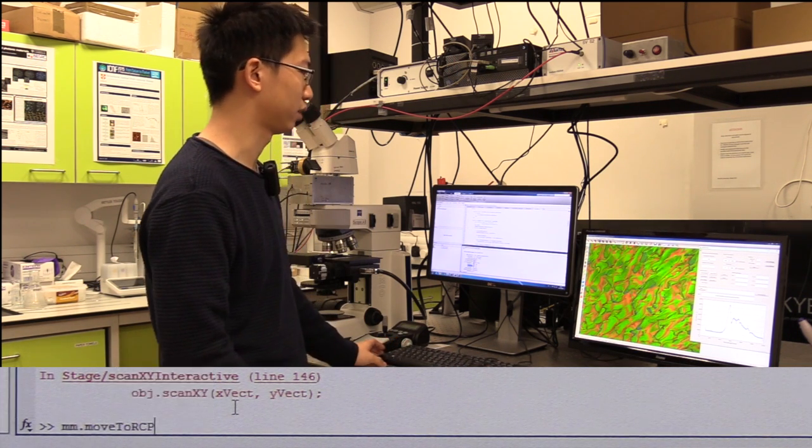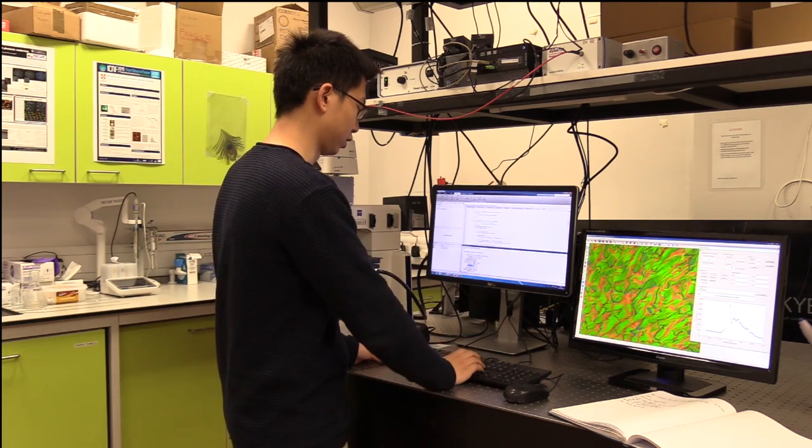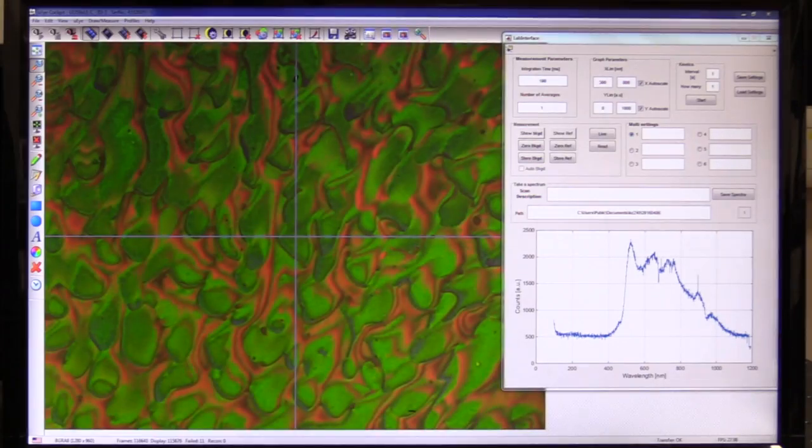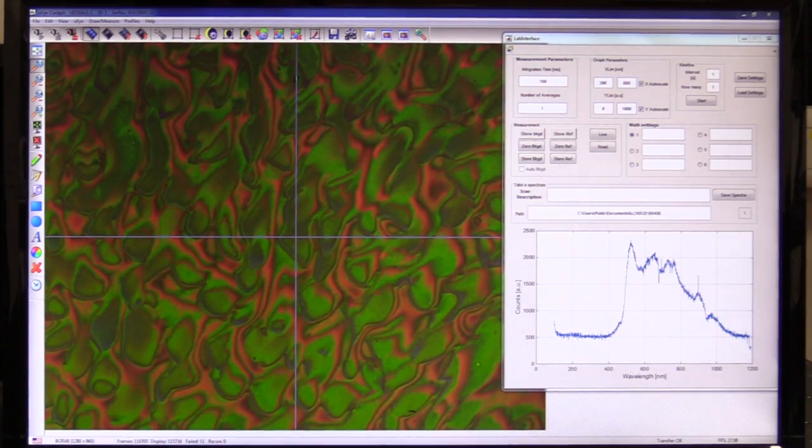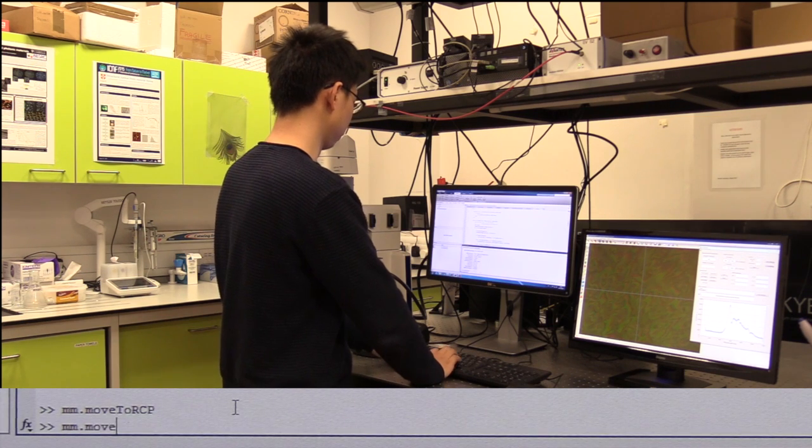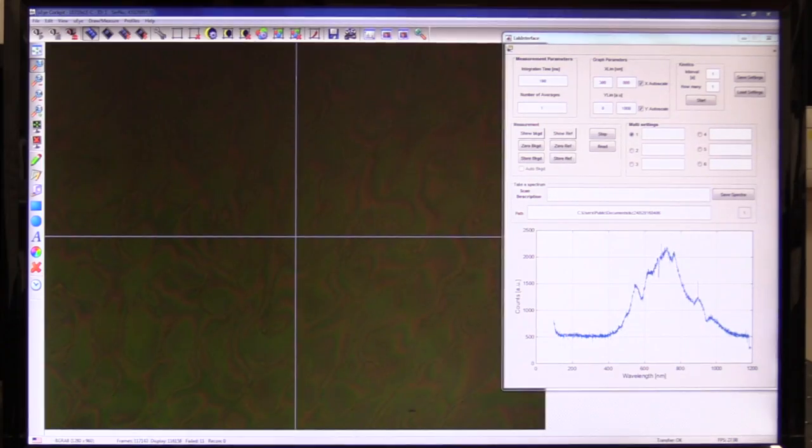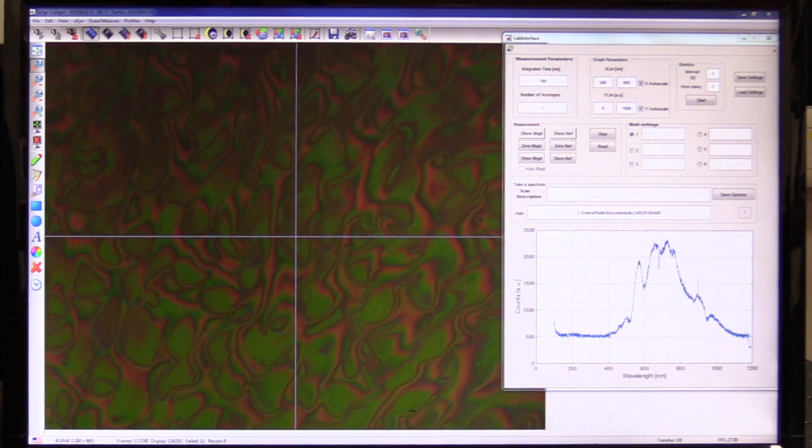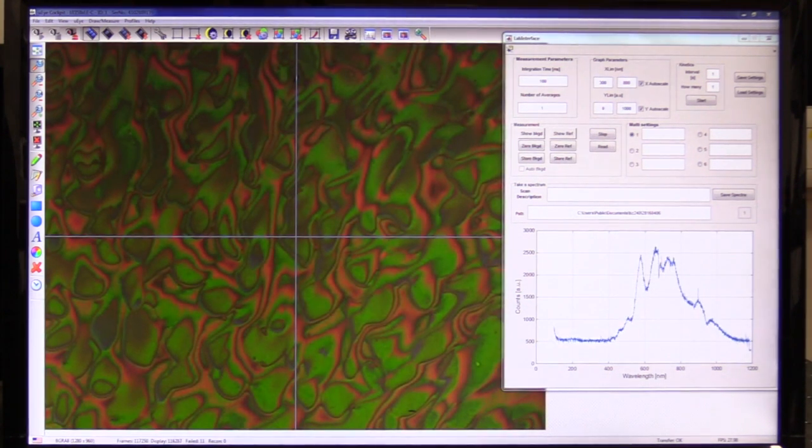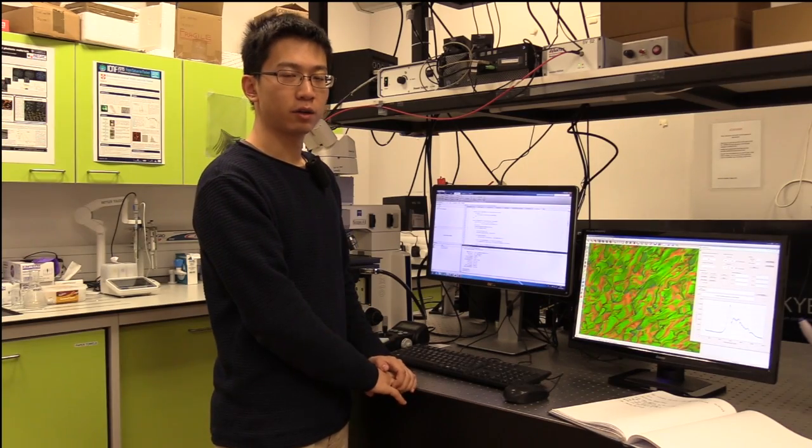Now I will show you how to move it to the right-hand circular polarization channel, and you will see the color on the screen fades out. Now to go back, I type in move to LCP and you can see the color comes back.